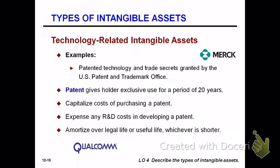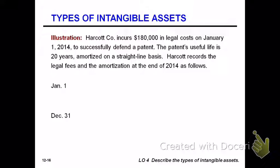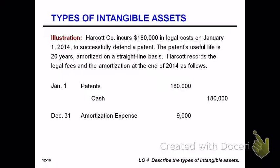Technology-related intangibles usually involve a patent. You can capitalize the cost of obtaining the patent — but only costs incurred after you have the item and are ready to patent it, or the cost of purchasing a patent. Patents are usually 20 years, though there are exclusions for drugs. Any costs of developing the idea — R&D — are expensed, not capitalized. You amortize the patent over its legal or useful life. For example, a company incurring legal costs to defend a patent and winning can capitalize those legal costs. Even if the patent was internally generated with nothing previously in the patent account, the capitalized legal costs are amortized over the patent's useful life — in this case, 20 years — at $9,000 per year.